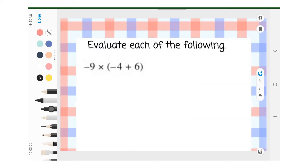Next, evaluate each of the following. Negative 9 multiply bracket negative 4 plus 6 close bracket. First, we have to solve negative 4 plus 6 because it's in the bracket. Negative 4 plus 6 is 2. Now, you just have to take negative 9 multiply 2, and the answer is negative 18.